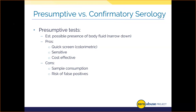Presumptive testing is advantageous because the cost of the reagents is minimal — just cents on the dollar. These tests are typically highly sensitive but have low specificity, meaning we can detect very low-level traces, but the tests can be tripped up by other components and elicit false results such as a false positive or false negative. In a false positive, we get a result indicating a body fluid is present when it actually is not.